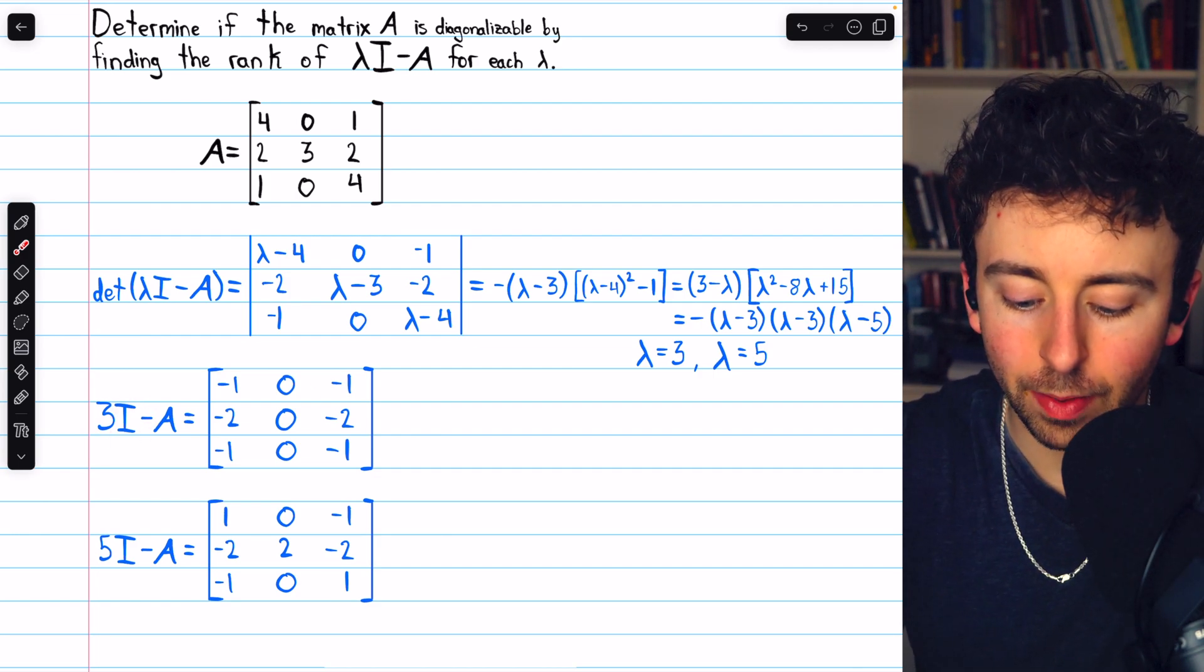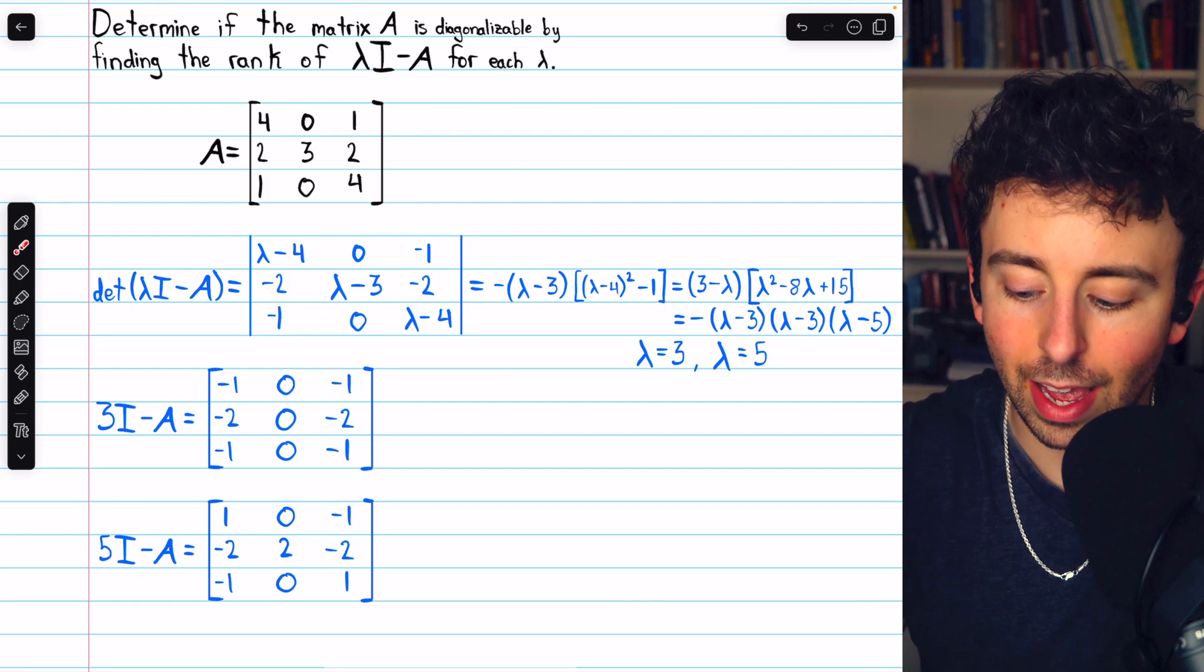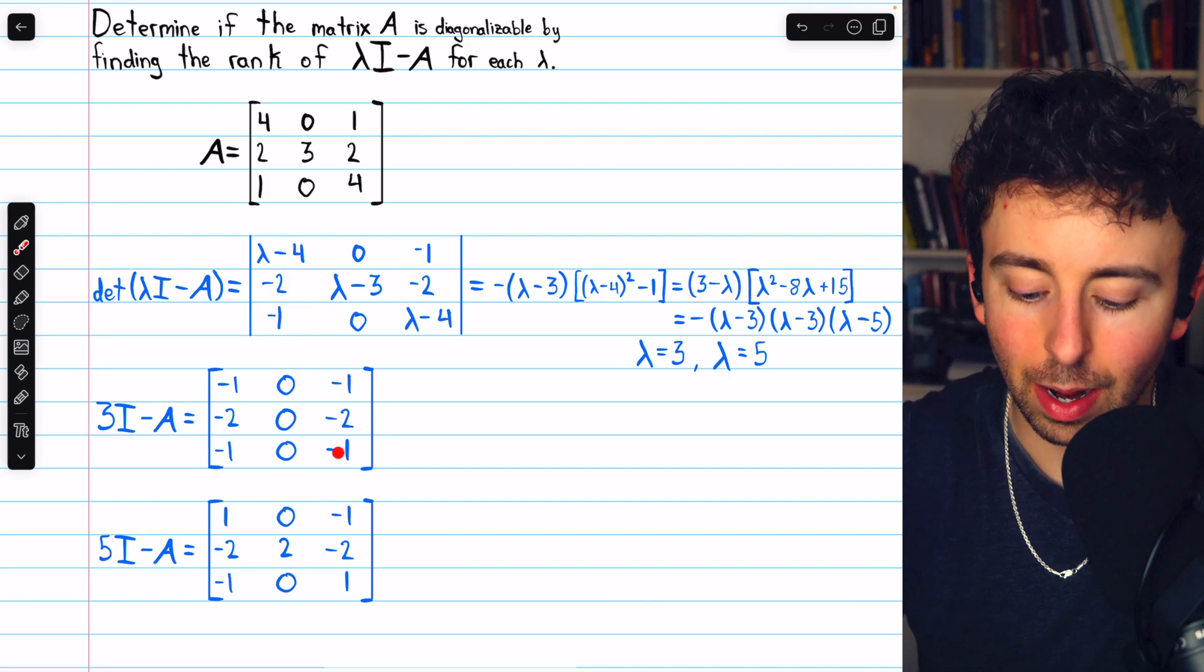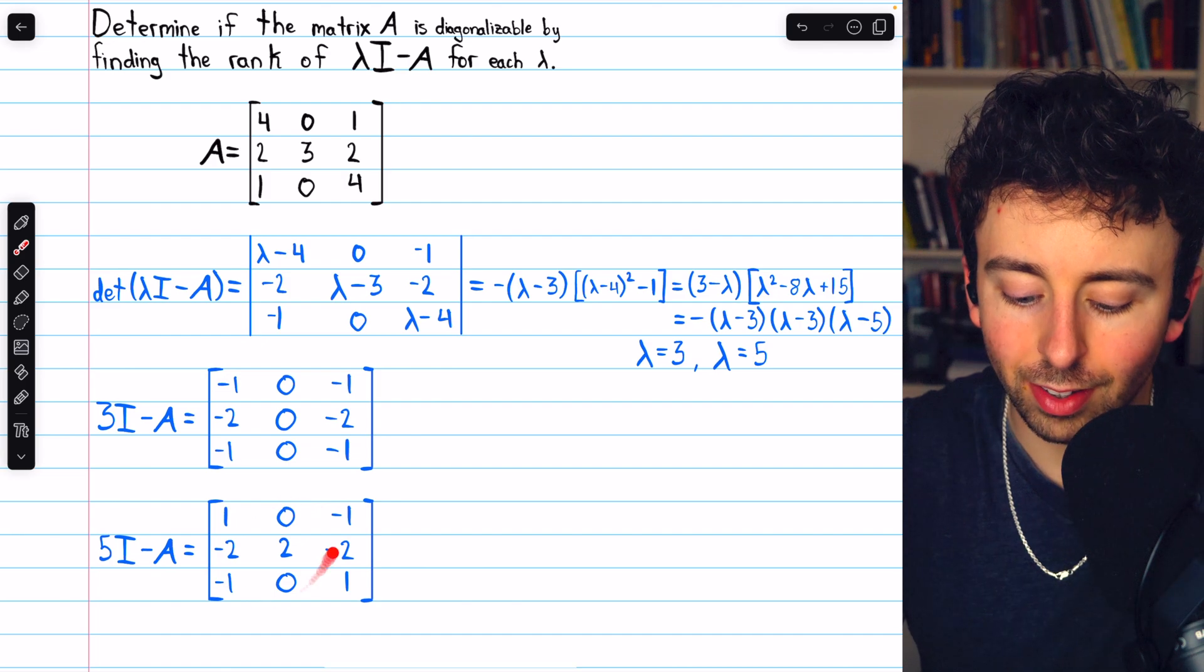Here's 3I minus A, that's just this matrix but with the eigenvalue 3 in place of lambda. And here's 5I minus A, which is similar.